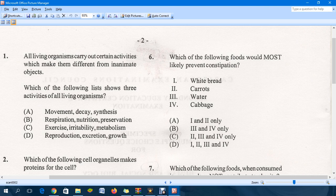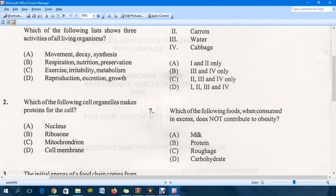In terms of the combinations for C, we have II which is carrots - that is a vegetable so you will get some roughage from that. III is water, very important. And IV is cabbage. Definitely with you consuming these foods it can prevent what is known as constipation.